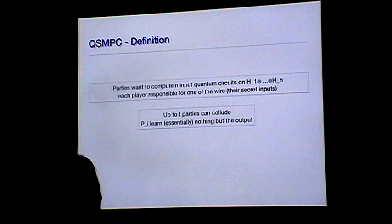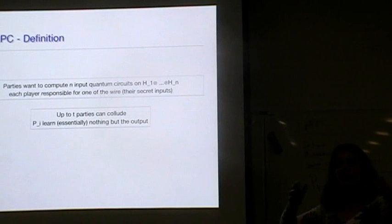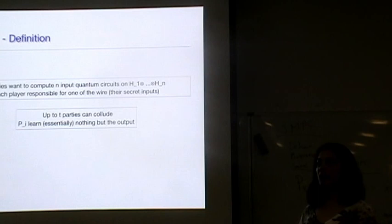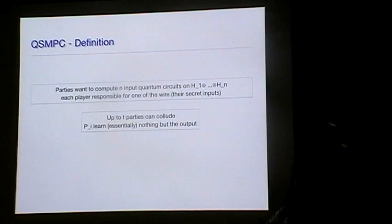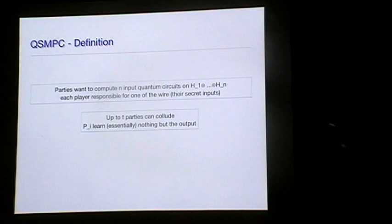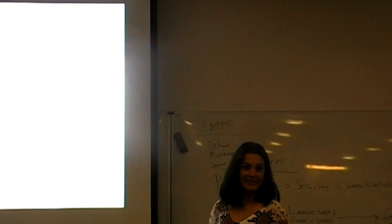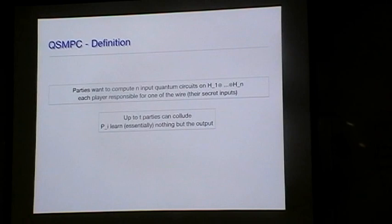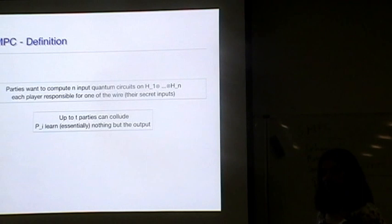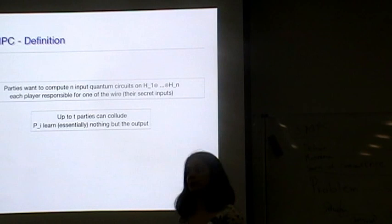Quantum-secure multi-party computation is the same concept as the classical one: you have parties wanting to compute a joint function — think of it as a gigantic pre-agreed quantum circuit — where each party has their own private input, and the output is announced. You want to make sure that except for the party in charge of a particular wire in the circuit, nobody else learns its value. The trusted third party in the quantum version can itself be a quantum computer.